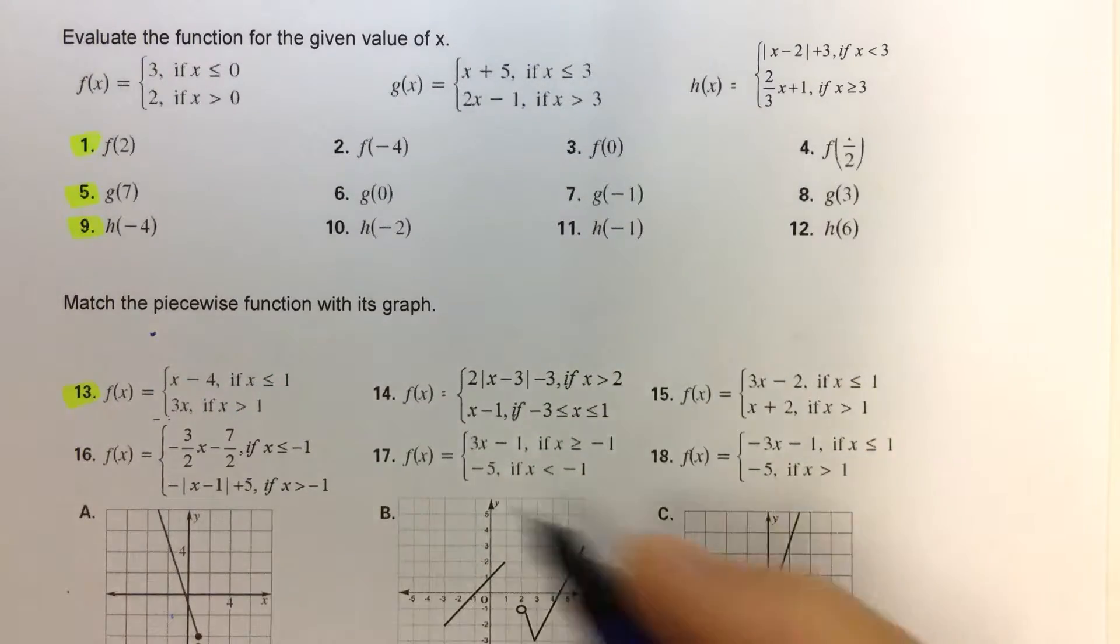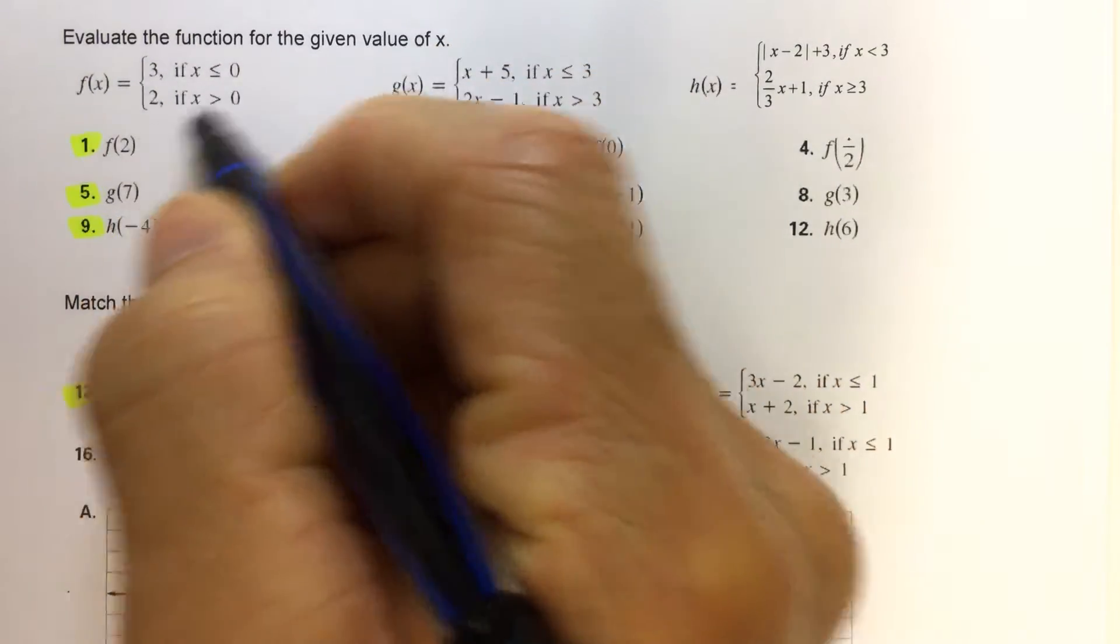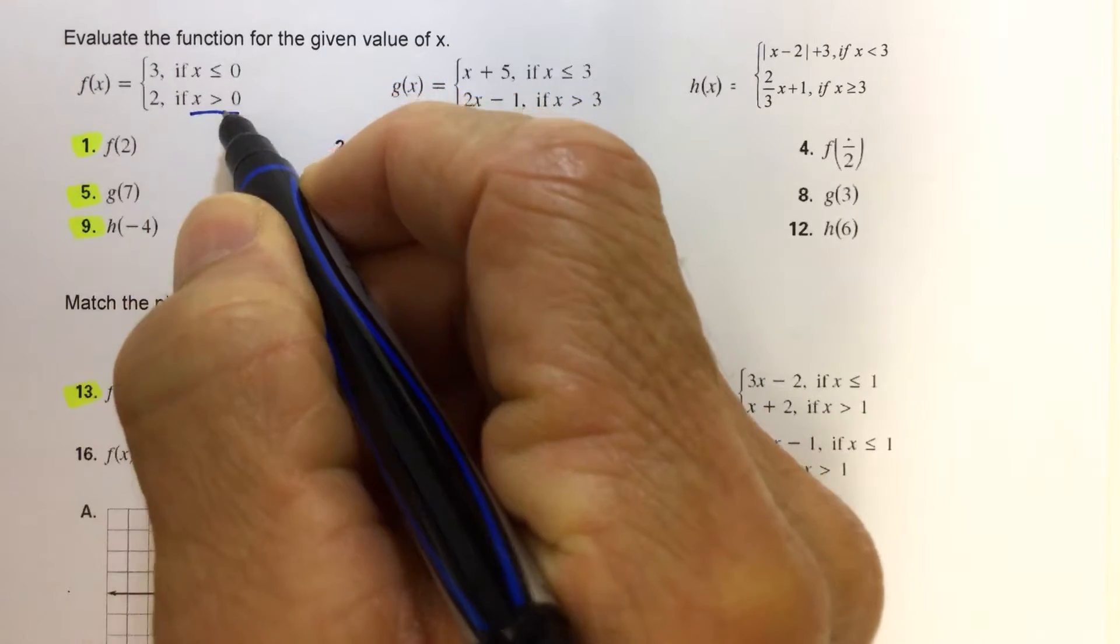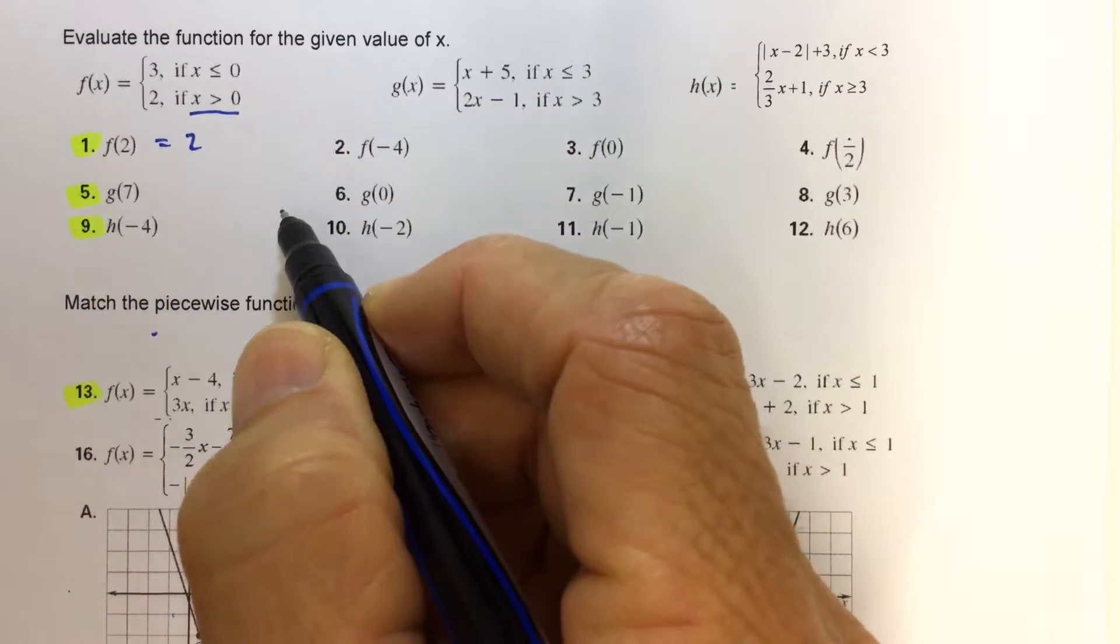So for problem number one, f of 2, we have to figure out which piece do we use. Well, 2 is greater than 0, so that would be 2.